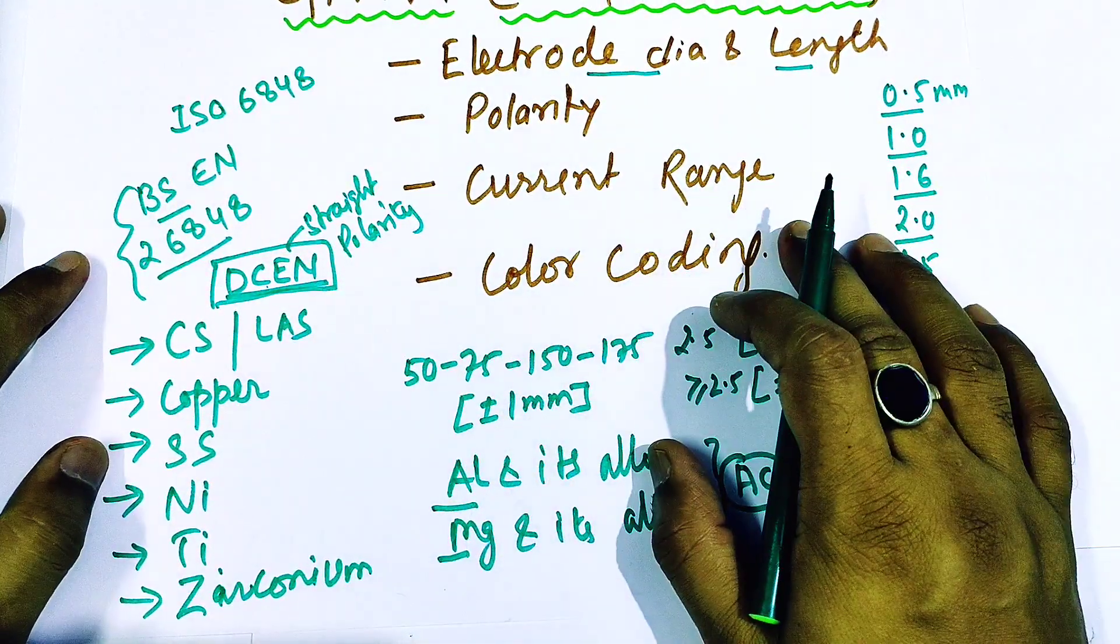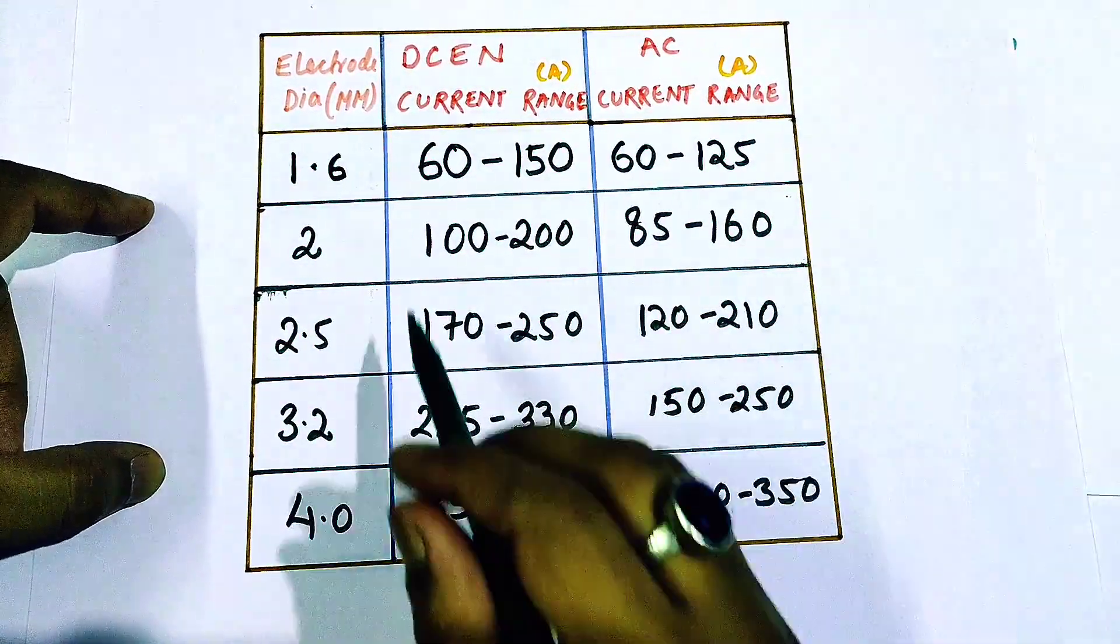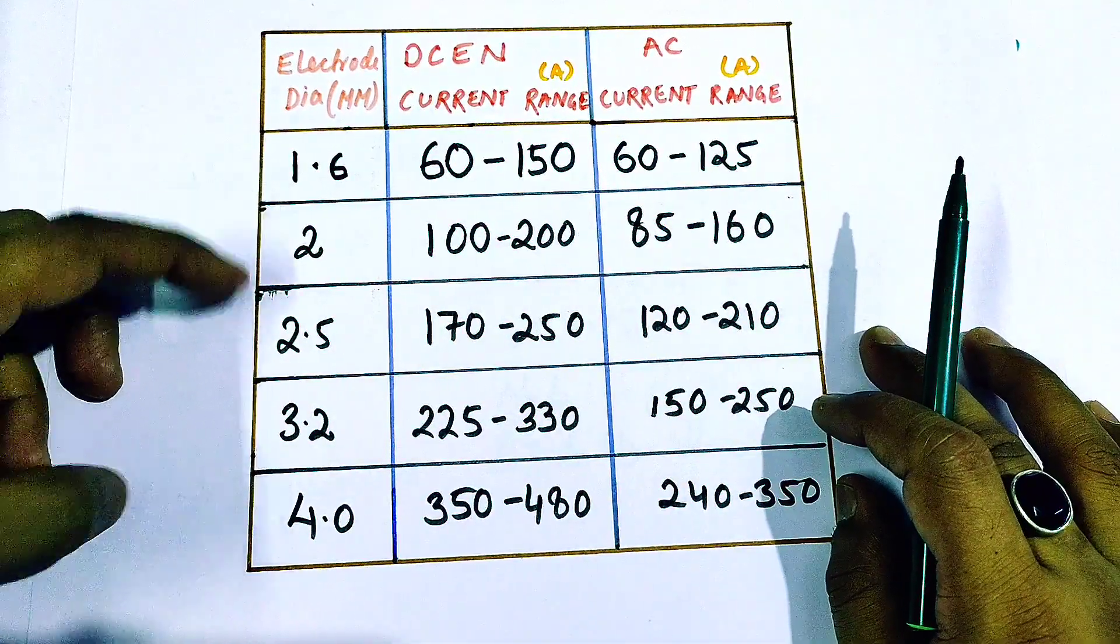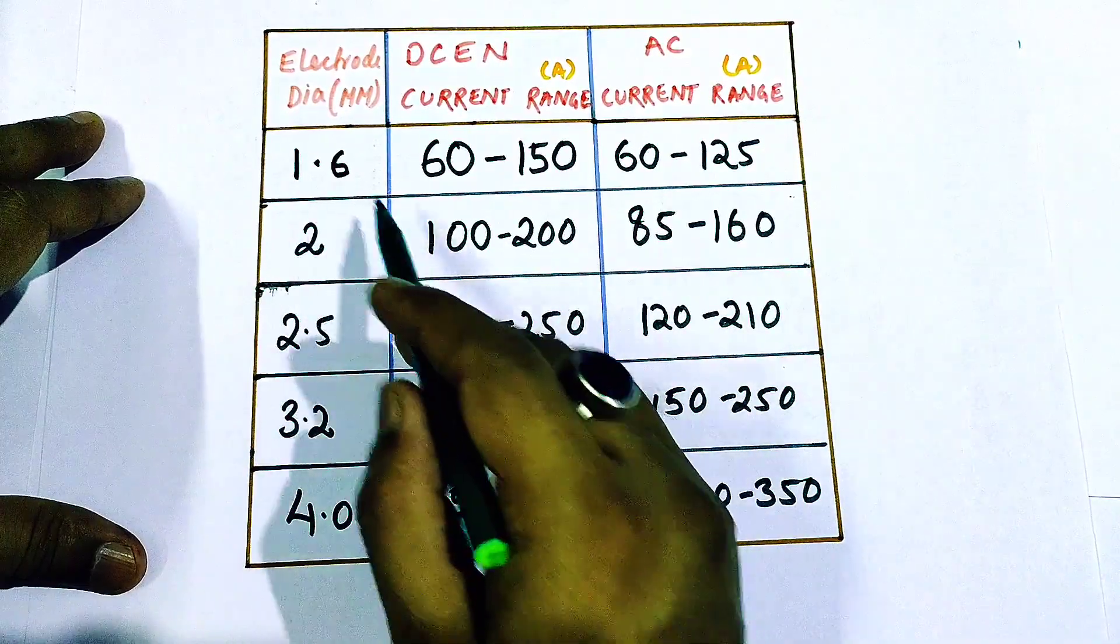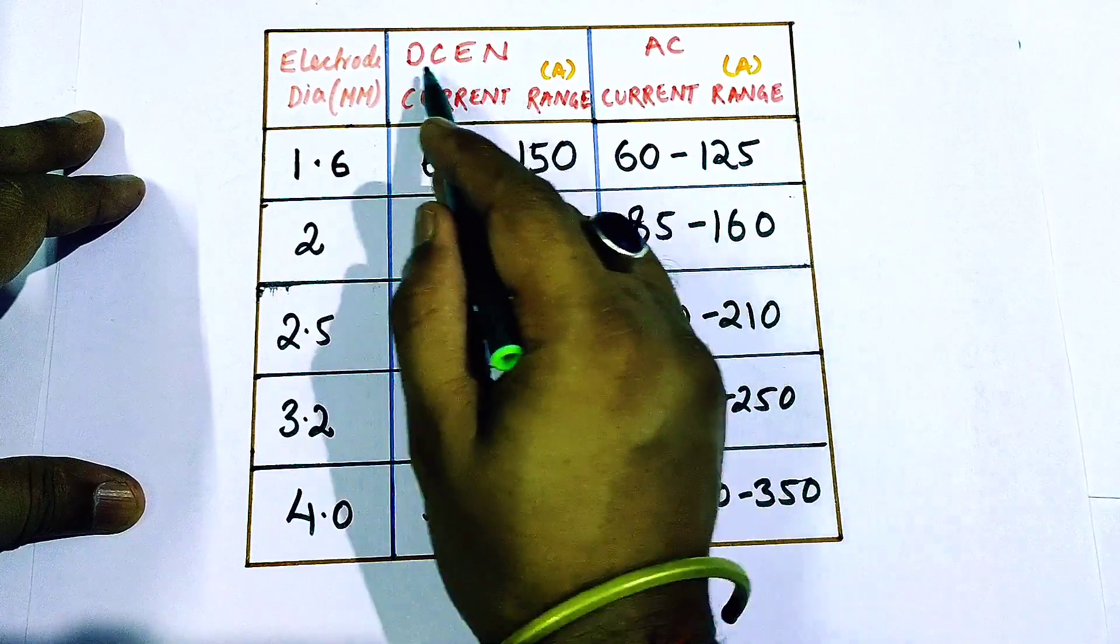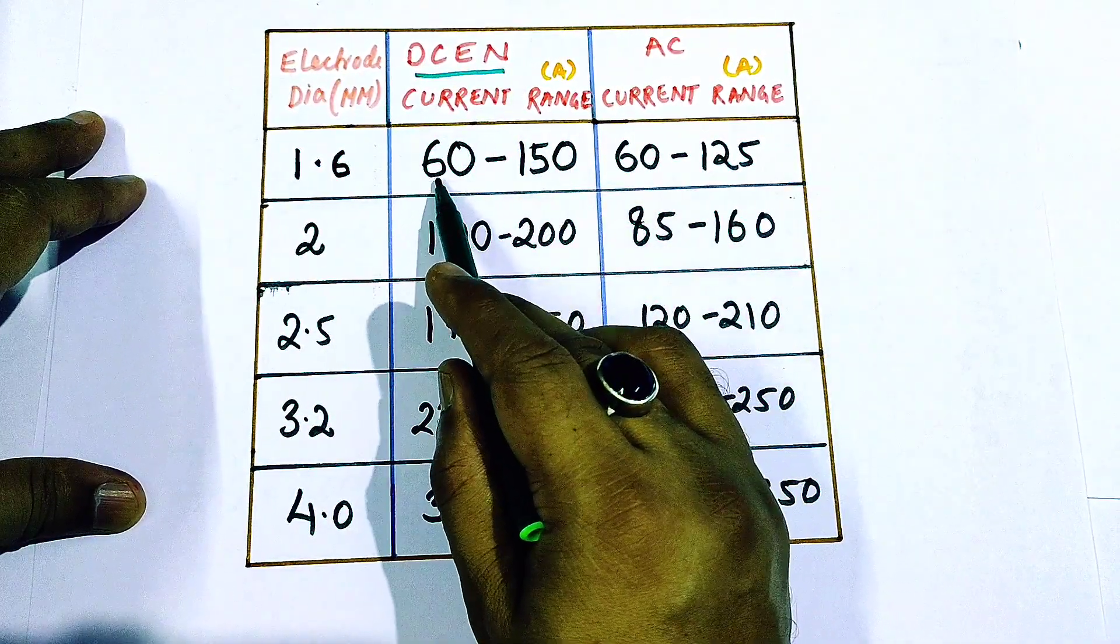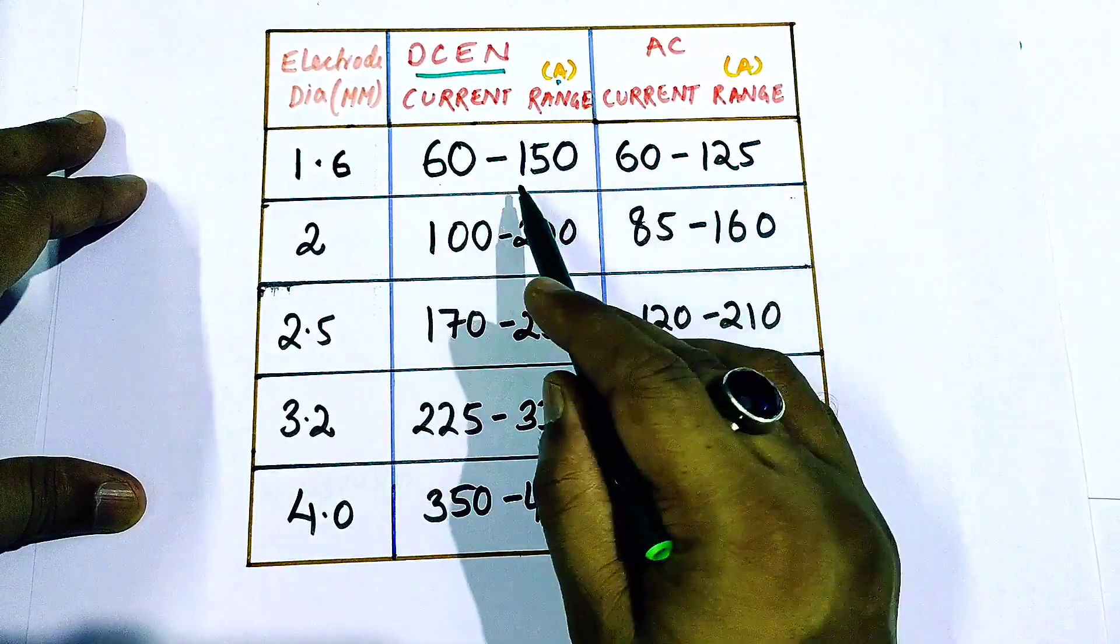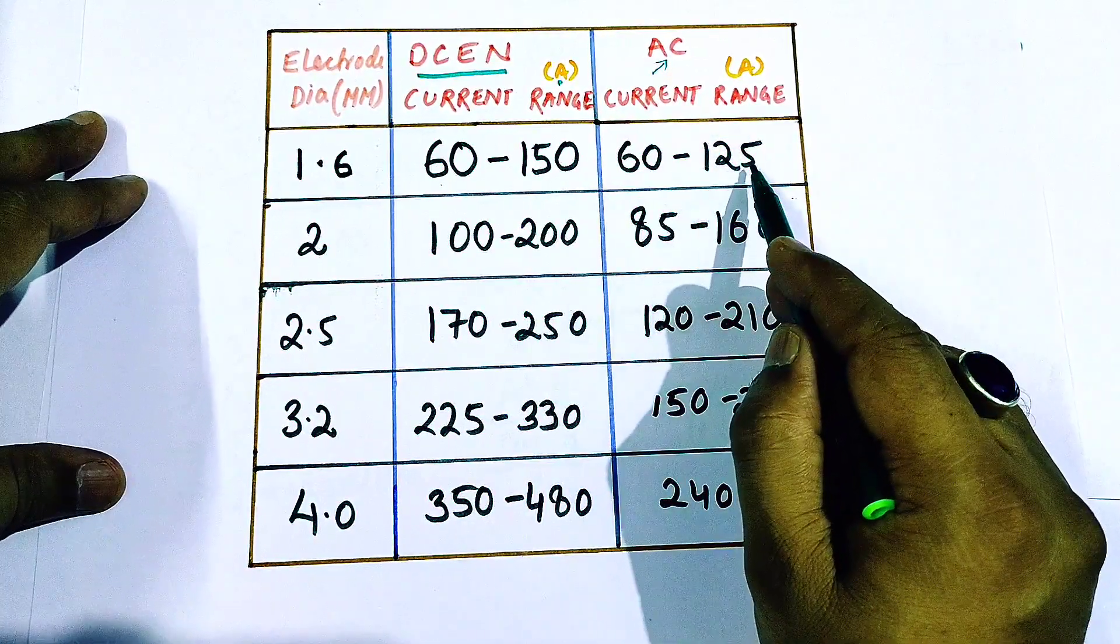So now we'll learn about the current ranges. Friends, this is the chart for current range. Here I've written the electrode diameter in mm and I've taken only five electrode diameters which are very much used in the industries. So for 1.6 mm diameter, if the polarity is DCEN, direct current electrode negative, then the range is between 60 to 150 amperes. This is given in amperes. And if it is AC, then the range is between 60 to 125.